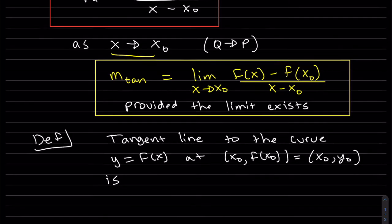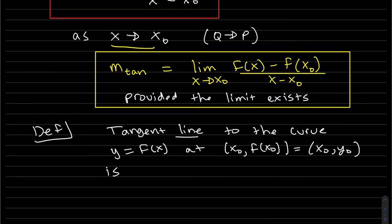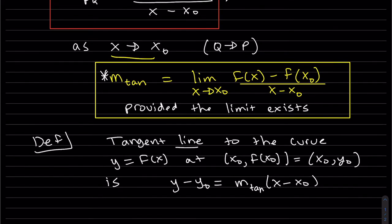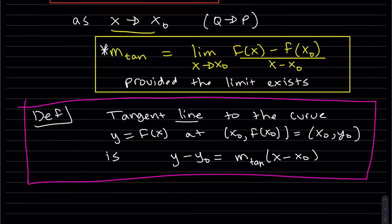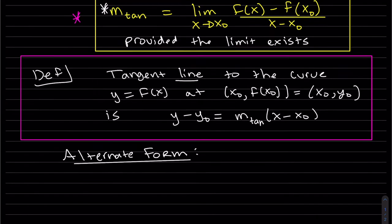So if we want the actual tangent line to the curve — we're looking for the equation of a line — it's y minus y-naught equals your slope times x minus x-naught, where the slope is the slope of the tangent line that we just found. There is also an alternate form to this equation for the slope of the tangent line.